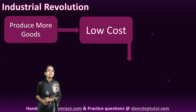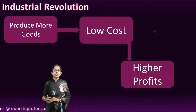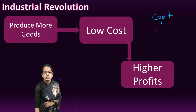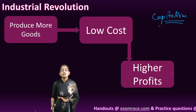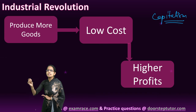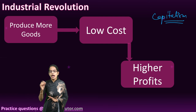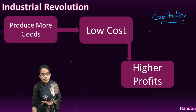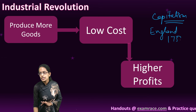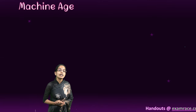With the Industrial Revolution, the idea of capitalism got a thrust because the owners and investors were now able to produce huge amounts of goods at significantly lower cost, and therefore had huge profit margins. Industrial Revolution is attributed to England, and it is believed that in the 1750s the Industrial Revolution started. We also call this age the machine age.